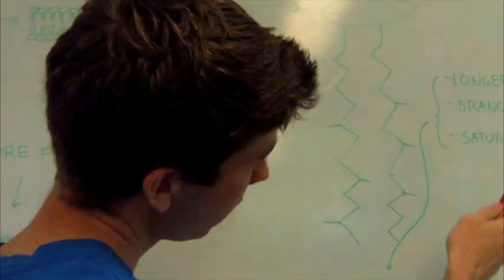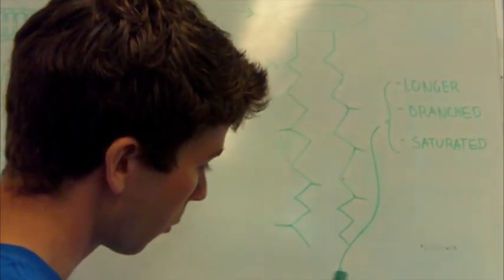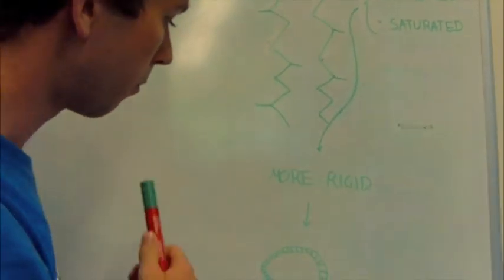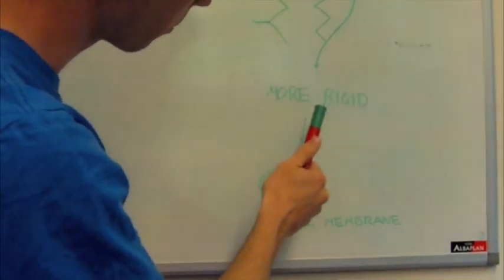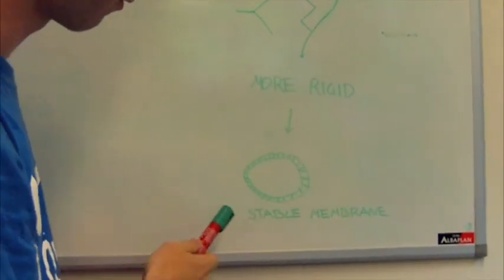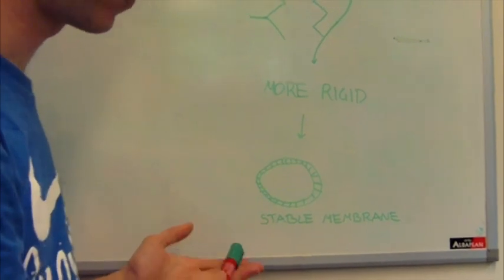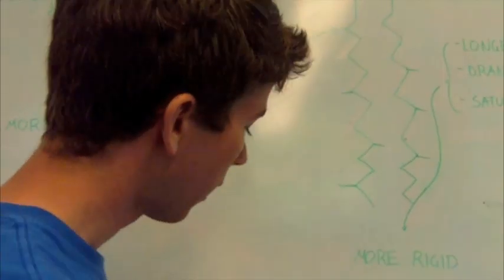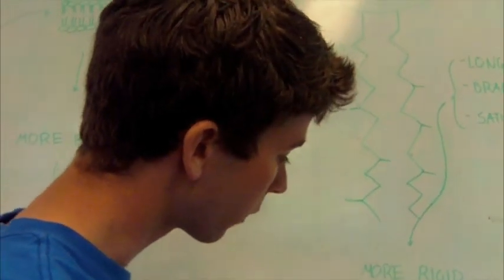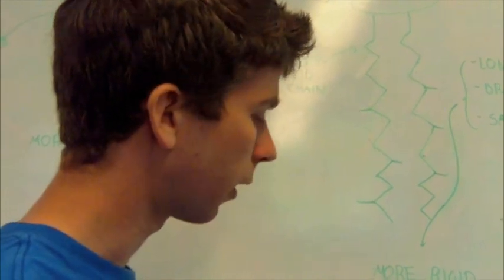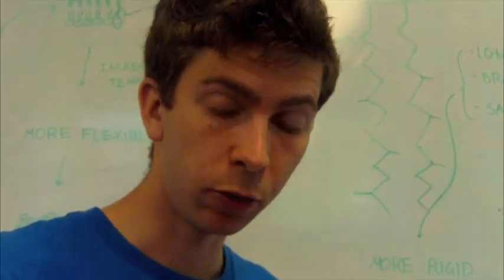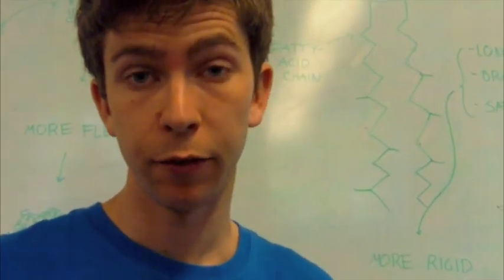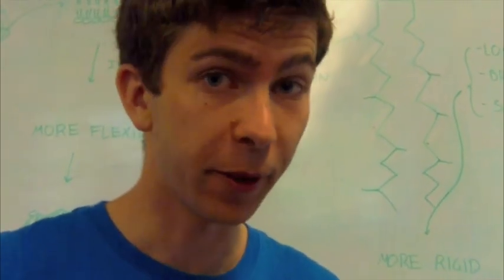Together, these features give a more rigid membrane. The more rigid membrane provides a very stable membrane in the hot environment, and this will make the thermophiles able to survive in very hot environments.